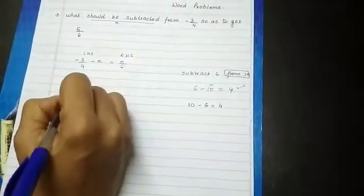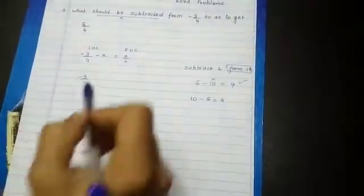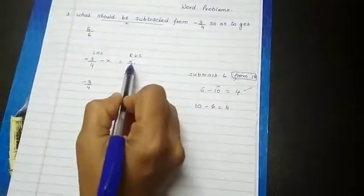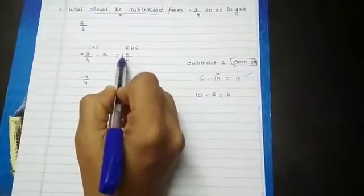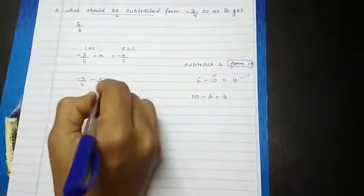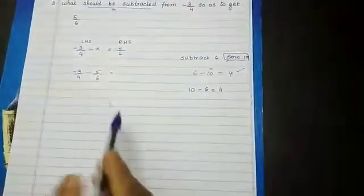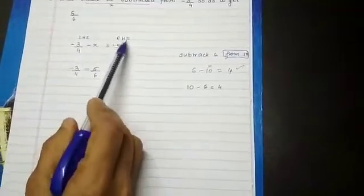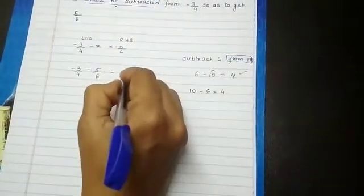So minus 3 by 4 is in left side. Let it be as it is. And 5 by 6, which is on right hand side, which has a plus sign, will become minus 5 by 6 equal to minus x. When it goes to right hand side, it will become plus x. Minus x becomes plus x.